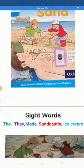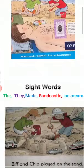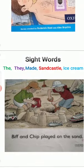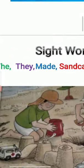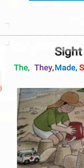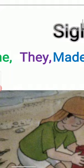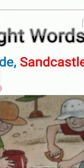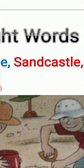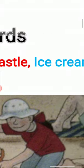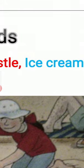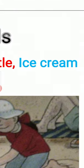Before reading, we are going to read the sight words. The first word is 'the', second word is 'they', next word is 'made', next is 'sandcastle', and the last new word is 'ice cream'.